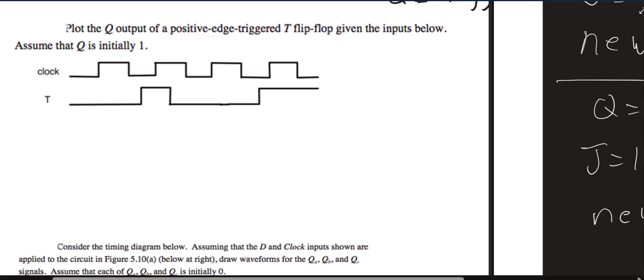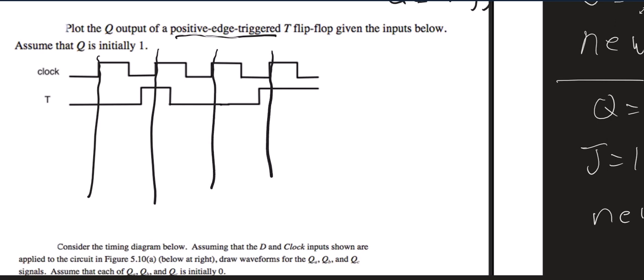So it says positive edge triggered, and when that's the case, I like to draw vertical lines at my positive edges because I know that's the only place I can change. And we have that Q is initially 1. So Q is 1.